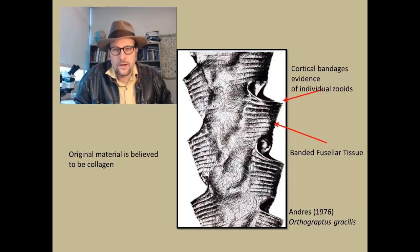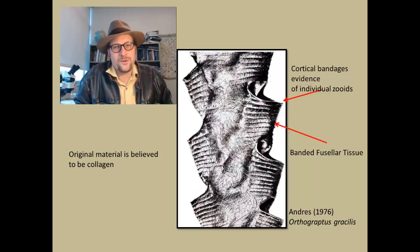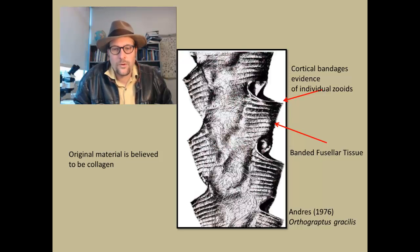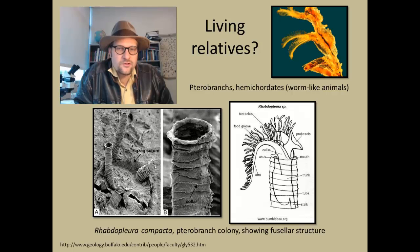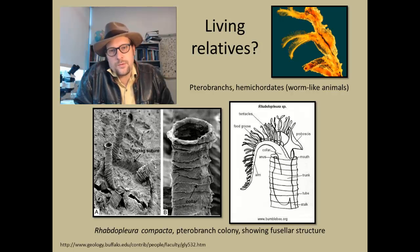This is an example of a very nice, probably one of the best examples of a three-dimensional image of a graptolite in detail. This is Orthographis gracilis. We are starting to get a clue of what graptolites might actually represent and some possible living relatives that do this type of skeletal growth using collagen.